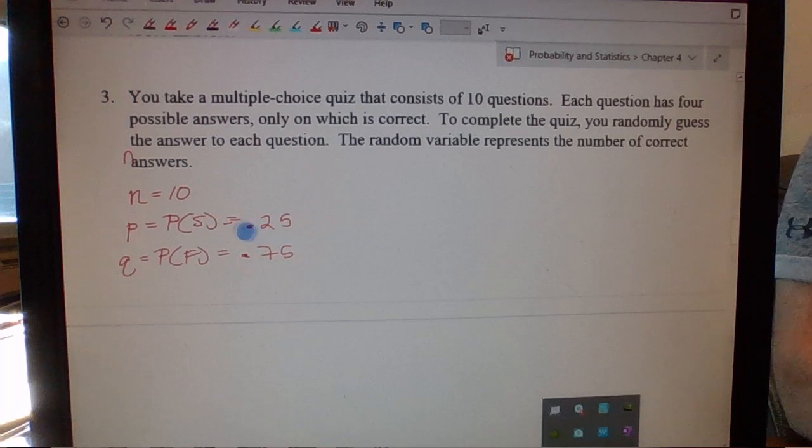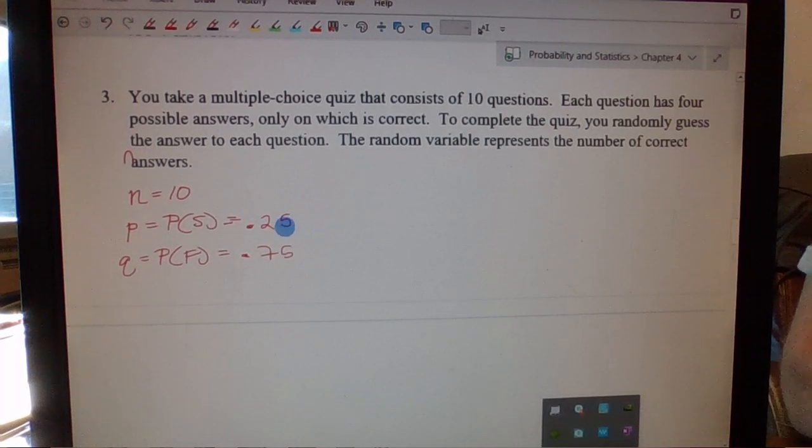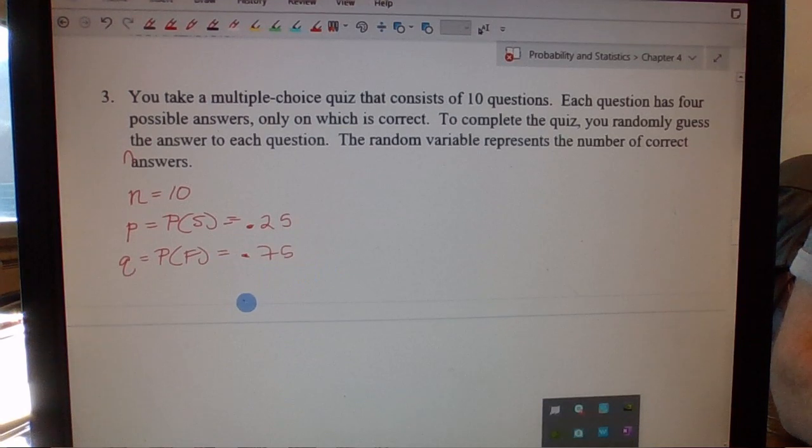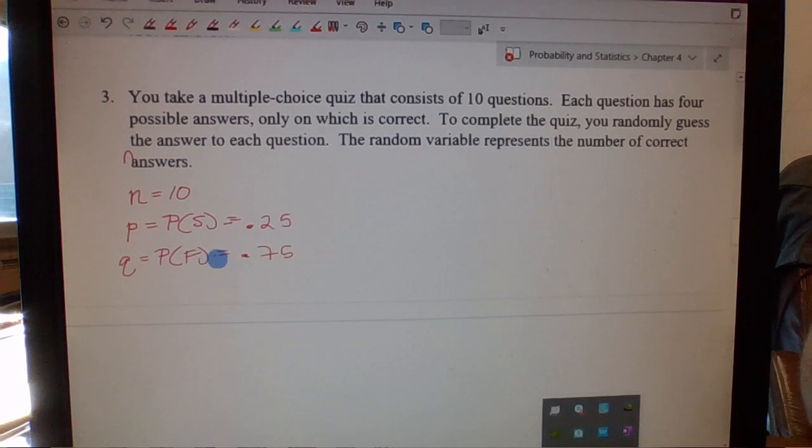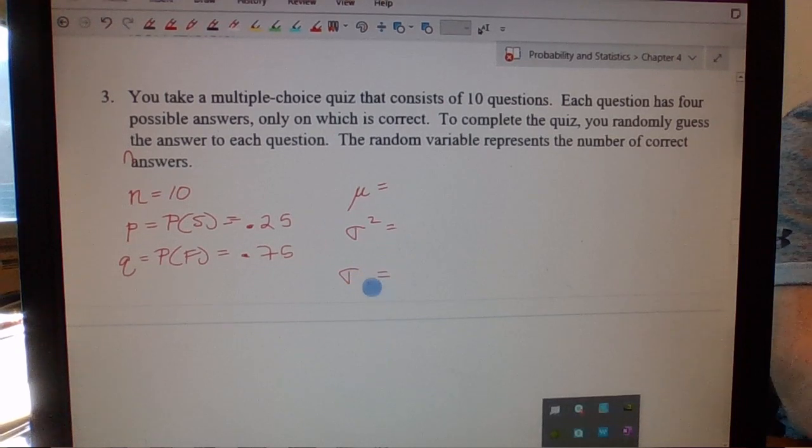So we have independence, we have probabilities staying the same for every trial, and we've got a fixed number of trials. So we have a binomial distribution here. We have two outcomes, a success and a failure. So now the question is, what is the mean? What is the variance? And then what is the standard deviation?